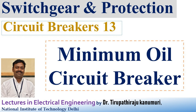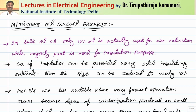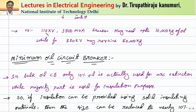Today we are going to discuss the minimum oil circuit breaker. In the last class we saw the bulk oil circuit breaker, where for a rating of 110 kV the breaker needs about 10,000 kgs of oil, which is very huge. Because of this huge quantity of oil, the size of the circuit breaker increases. Due to frequent operation, whenever contacts are opened, the oil decomposes into gases and carbon gets deposited on the contacts. To clean or check the contacts, we have to remove all the oil from the tank, which is very costly.